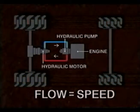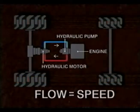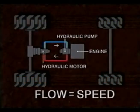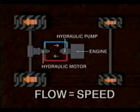This variable displacement pump provides flow to the motor in order to control the speed of the motor. In fact, the variable displacement pump provides infinitely variable speed within the range allowed by your transmission gear. It also determines the direction of the vehicle — forward or reverse.